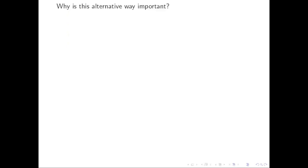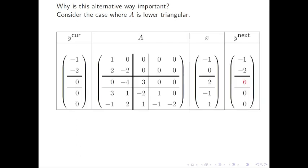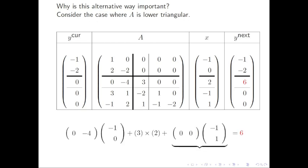Why did we go through the trouble to modify the algorithm in this way? It is because we are going to look at algorithms for multiplying with triangular and symmetric matrices. Here we show a typical step when the matrix is lower triangular. The row vector to the right of the diagonal element consists of zero components. A dot product of a zero vector with any vector yields zero, and hence we don't need to compute with that part of the row.